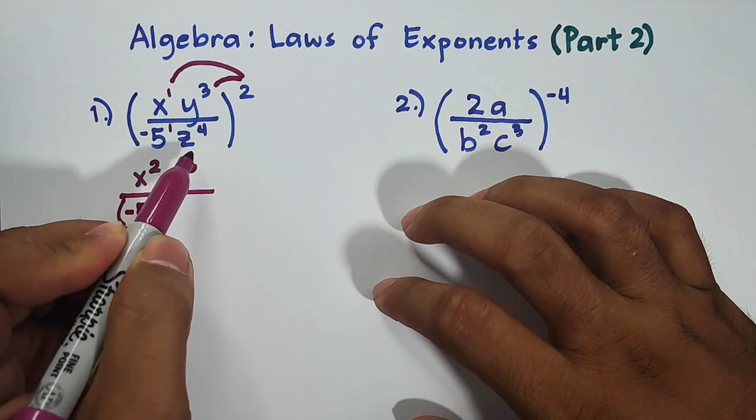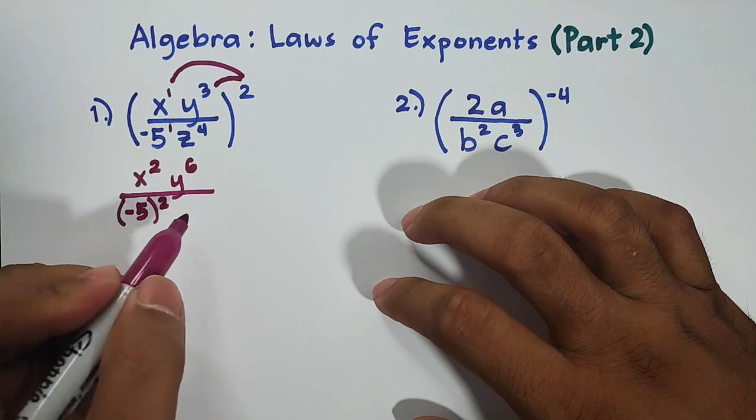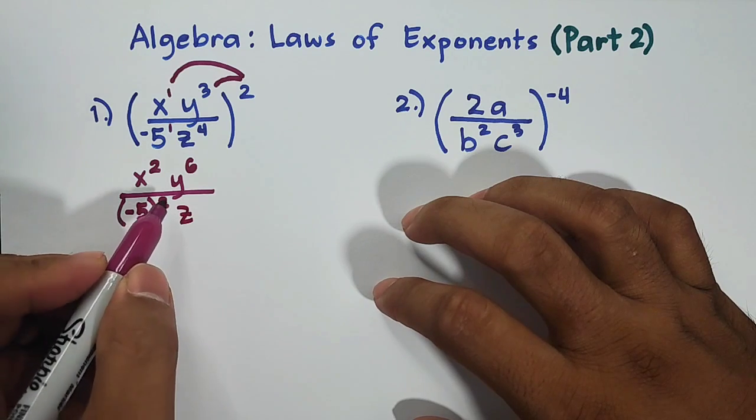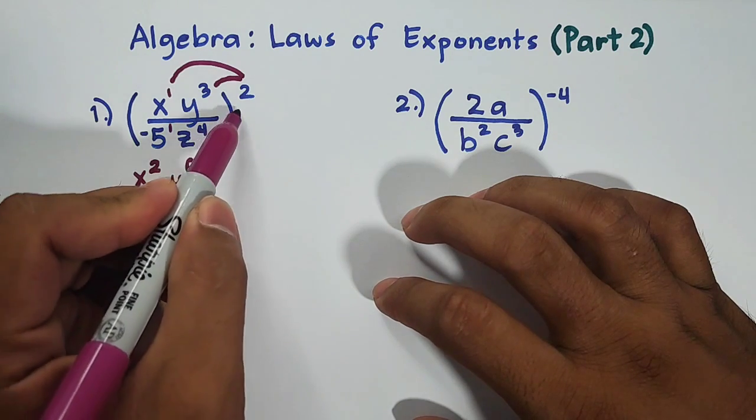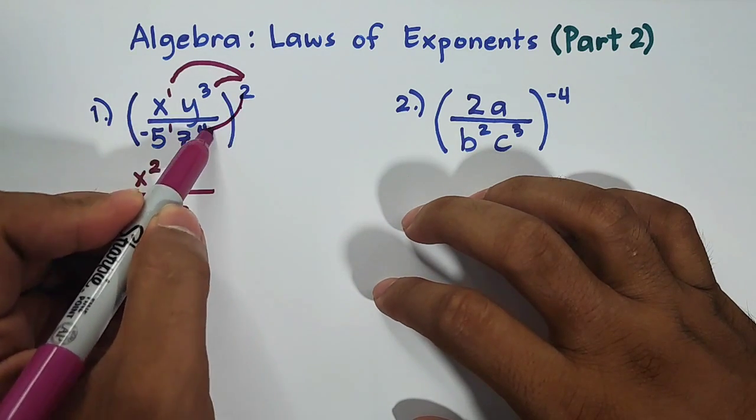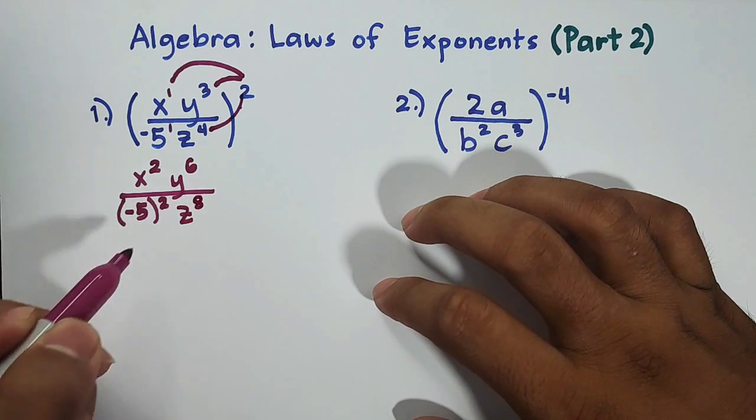As for the variable z, copy z, then multiply the exponents 4 times 2, that is z raised to 8.